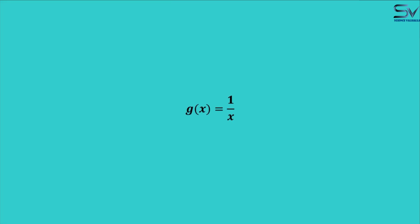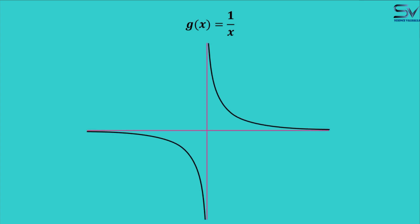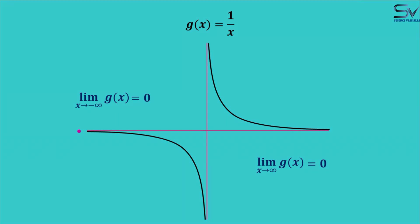Next, we look at the second example. This is a function g(x). Here also we see what will be the limit of the function when x approaches infinity. As x takes on larger and larger positive values, the function is approaching 0. In this way, the limit of this function is 0. If we find the limit at negative infinity, the function is also approaching 0 as x takes on larger and larger negative values. So the limit of this function is 0 even at negative infinity.